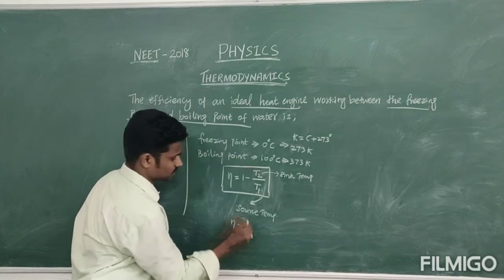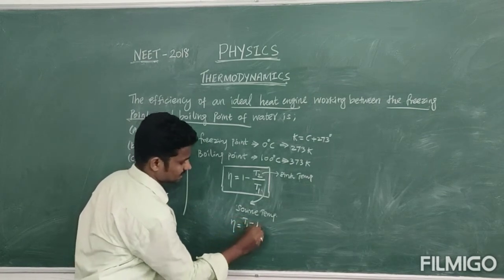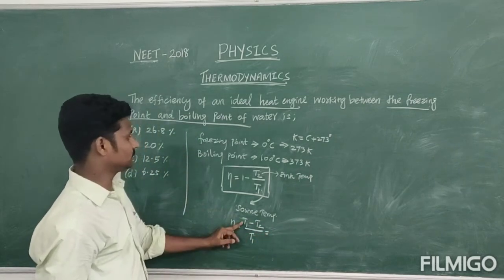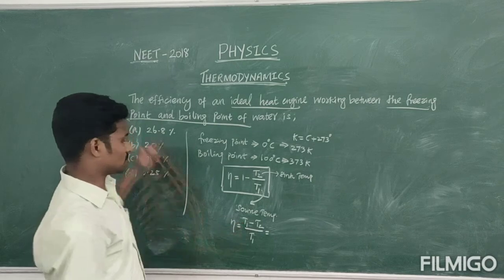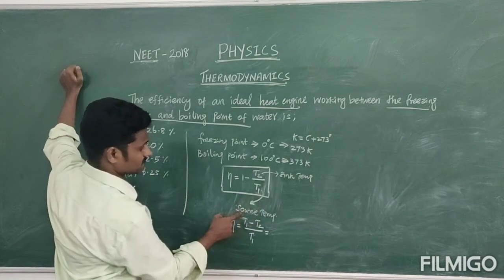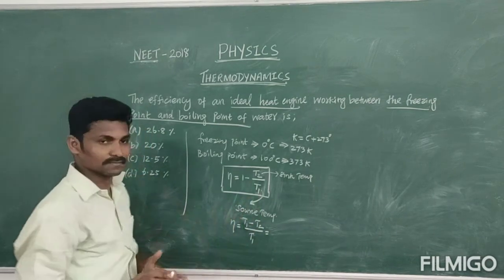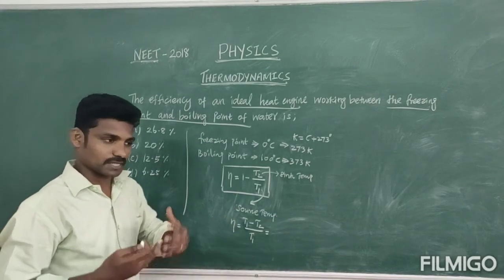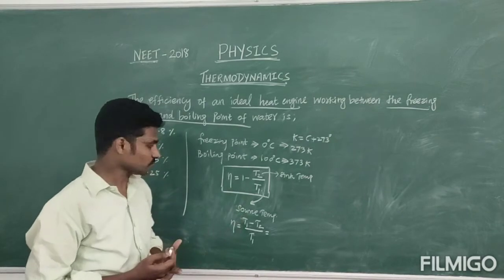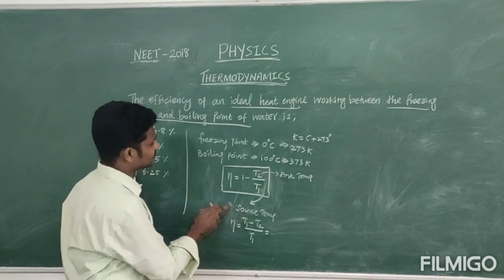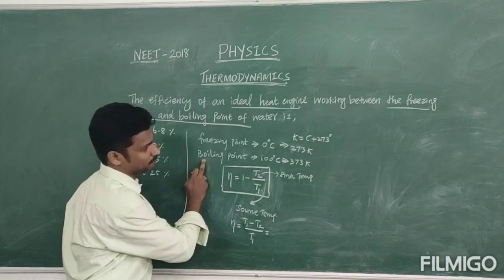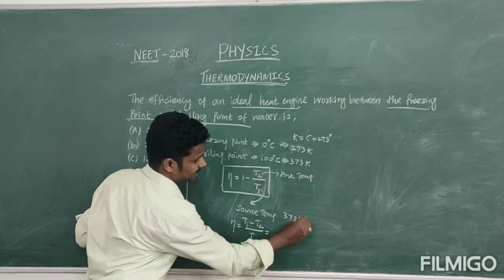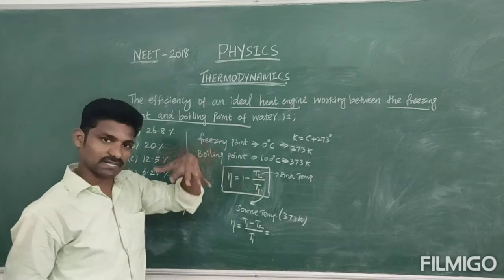So, what about T1 value? T1 is nothing but source. Source is nothing but high temperature. So, this high temperature, I taken as the boiling point, so that is 373 Kelvin.